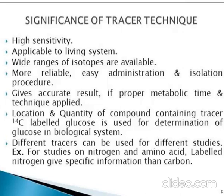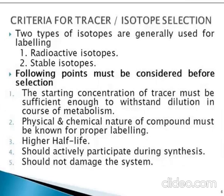It gives accurate results if proper metabolic time and technique are applied. It gives accurate results on the location and quantity of a compound. For example, 14C-labeled glucose is used for the determination of glucose in biological systems, and different tracers can be used for different studies — for example, for studies on nitrogen and amino acids, labeled nitrogen gives more specific information than carbon. For isotope selection, two types of isotopes are generally used: radioactive isotopes and stable isotopes.